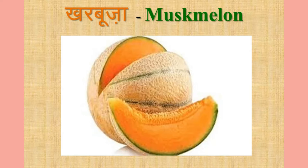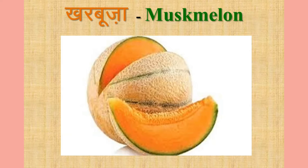You know what this is? It's musk melon. It is yellow in color and sweet — it's very good in the hot season. It cools your body. What is it called in Hindi? Kharbuja. And in English it's called musk melon.